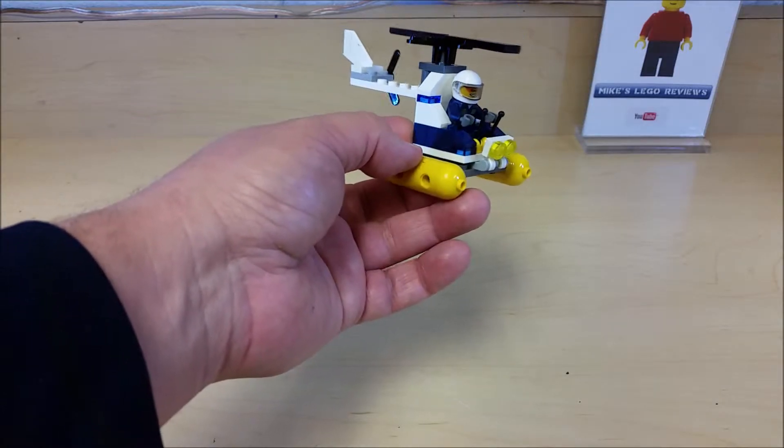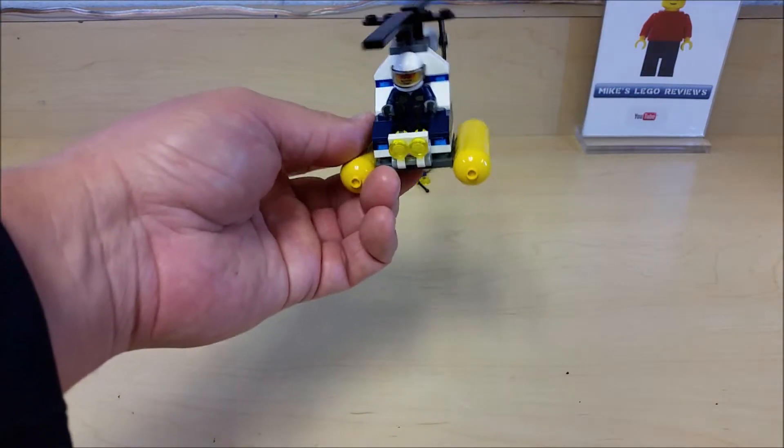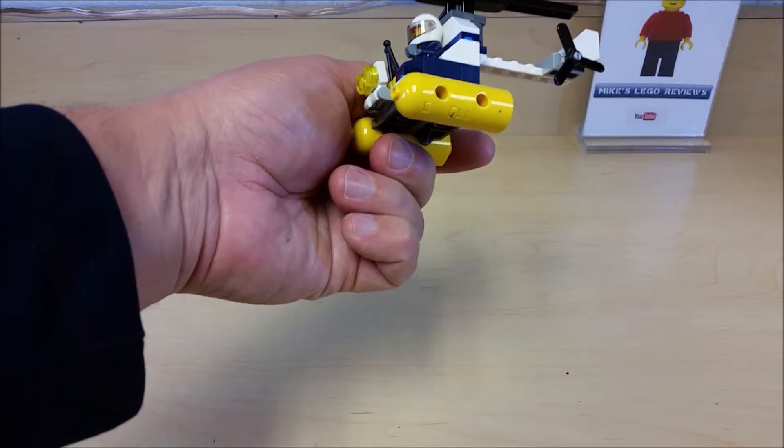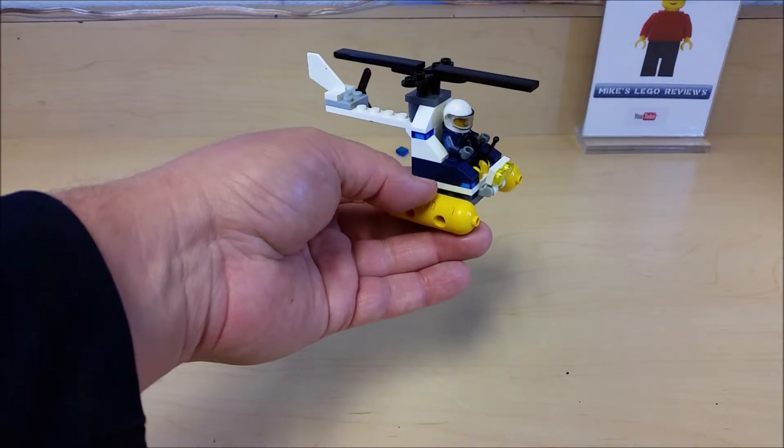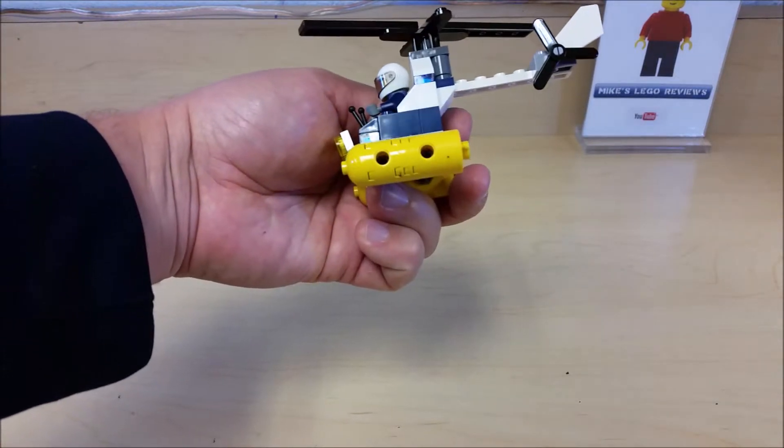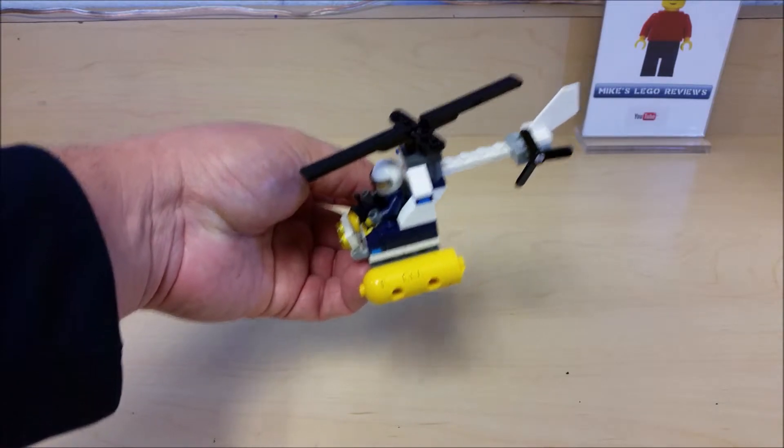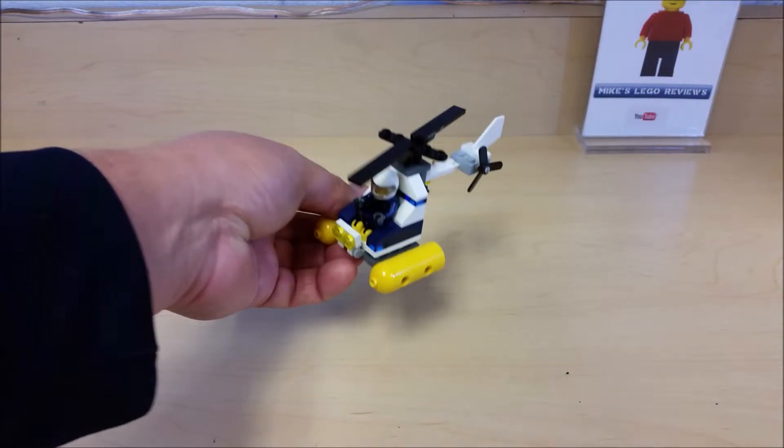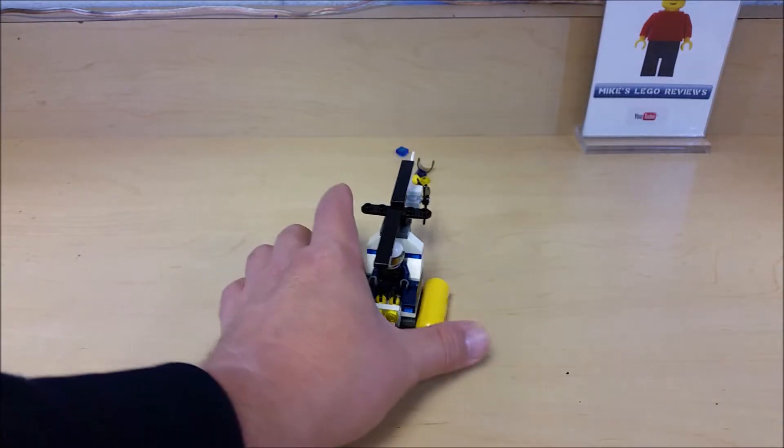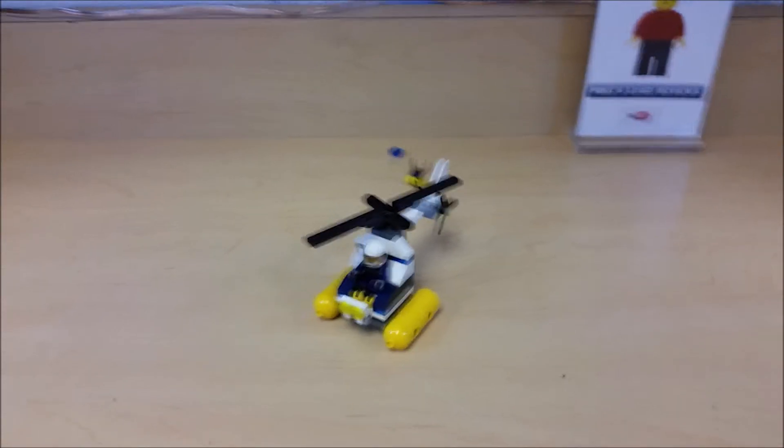So guys, that's the police swamp helicopter. I really like this thing and how it looks. It's a good little addition to your police units, police collection on your Lego City. That's my favorite type of Lego, is the Lego City and space Lego from way back in the day.